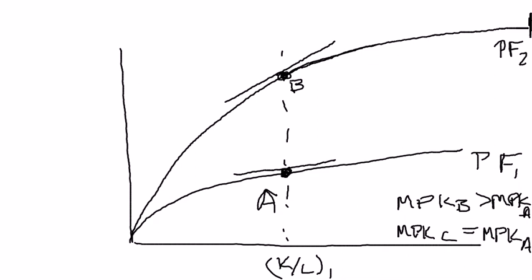Point C is obviously not going to be right here at point B, because we know the marginal product of capital at point B is greater than it is at point A. So the question then comes to this: do I want the capital stock to shrink, or do I want to be at a capital-labor ratio over here to the right? The key to figuring it out is the principle of diminishing marginal returns.